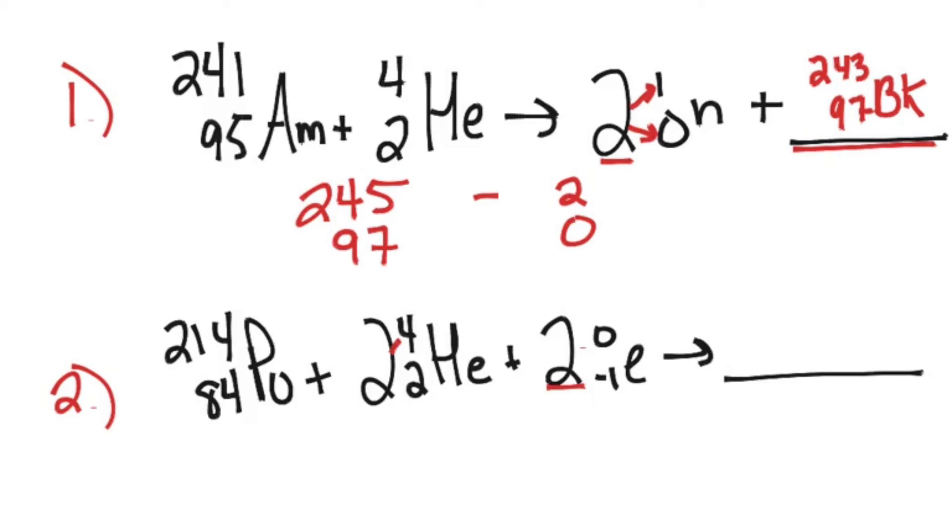So on the top, the top number on the left-hand side, I've got 214 plus 2 times 4, which is 8, so that gives me, if I write it out, 214 plus 8, or if I want to say that gives me 222 so far on the left-hand side.